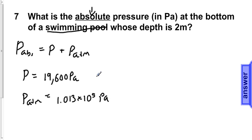Again, this is a given number that we should remember. The absolute pressure will be equal to 19,600 pascals plus 1.013 times 10 to the 5th pascals.